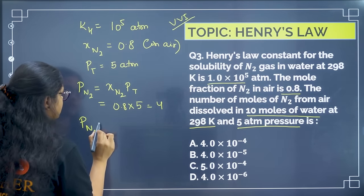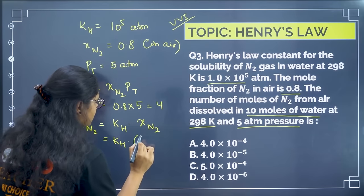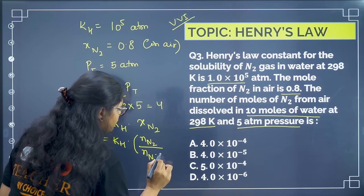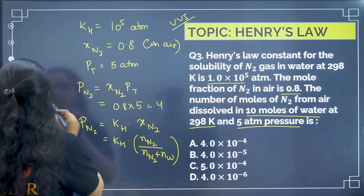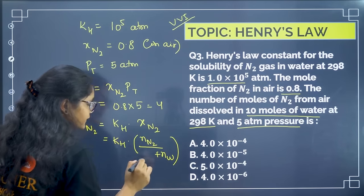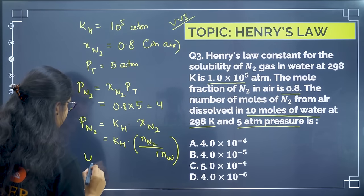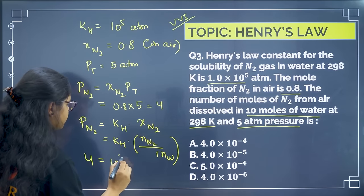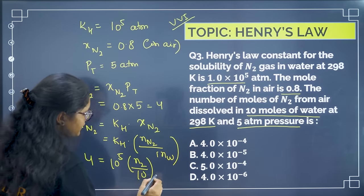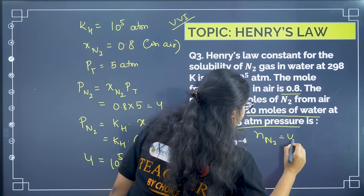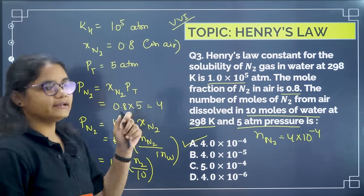Using Henry's law: P(N₂) = KH × x(N₂). Here x(N₂) = n(N₂) / (n(N₂) + n(water)). Since moles of water is much greater than moles of N₂, we can neglect n(N₂) in the denominator. Substituting: 4 = 10⁵ × n(N₂)/10. Solving, n(N₂) = 4 × 10⁻⁴ moles. Correct answer is option A. It's a slightly lengthy question but Henry's law must be prepared.